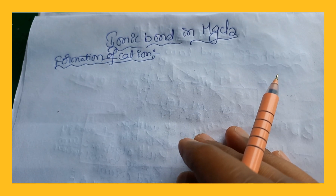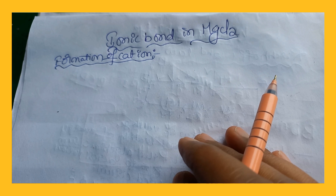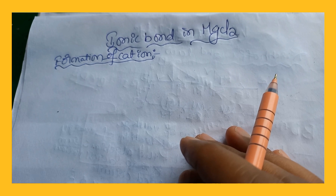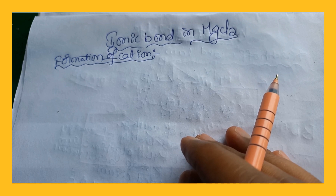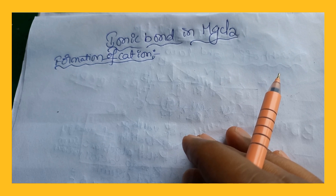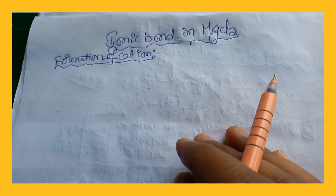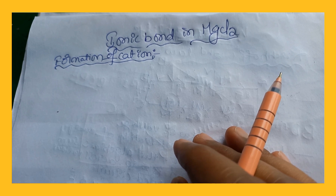Hi students, in the chemical bonding chapter for 10th class physical science, in the previous video we explained the formation of ionic bond in NaCl and calcium oxide. Now we cover the formation of ionic bond in magnesium chloride. The electrostatic force of attraction between two oppositely charged ions is called an ionic bond — also called electrostatic bond or electrovalent bond.